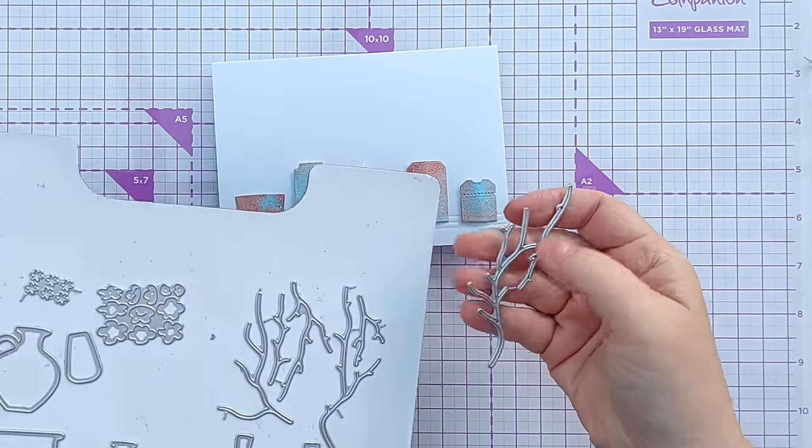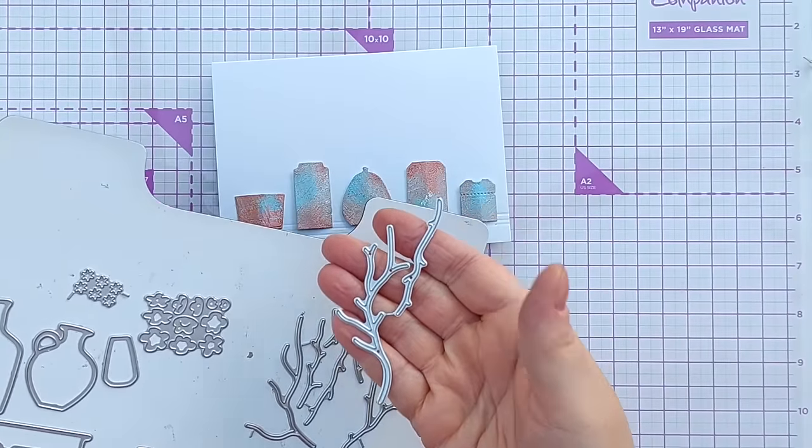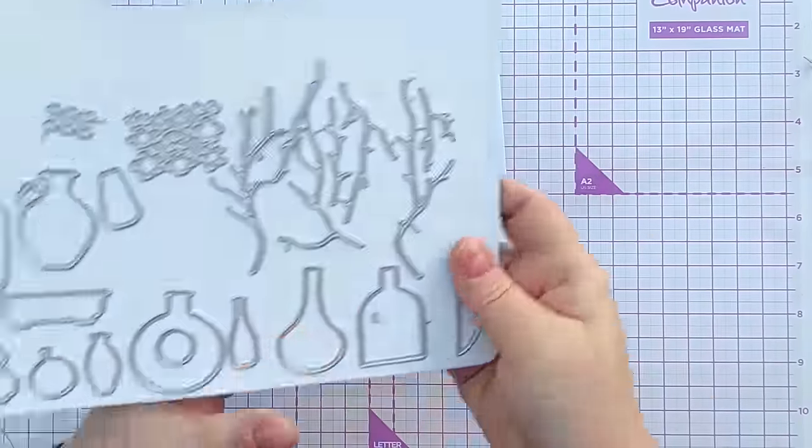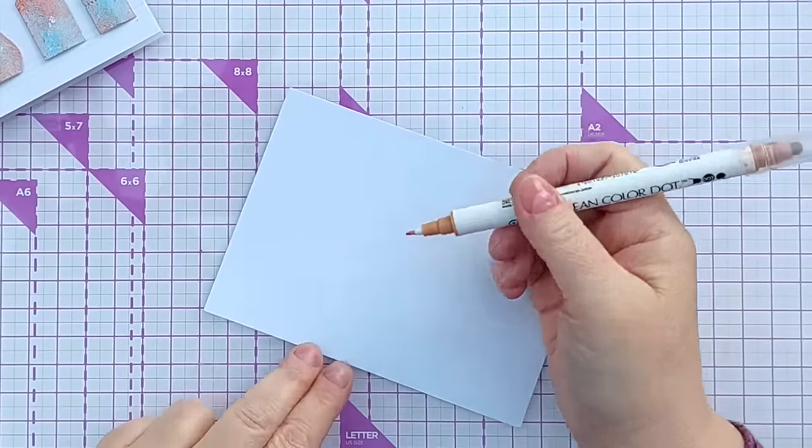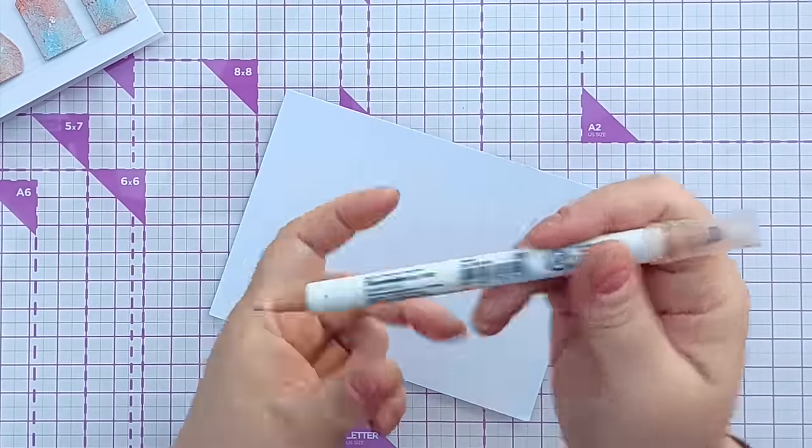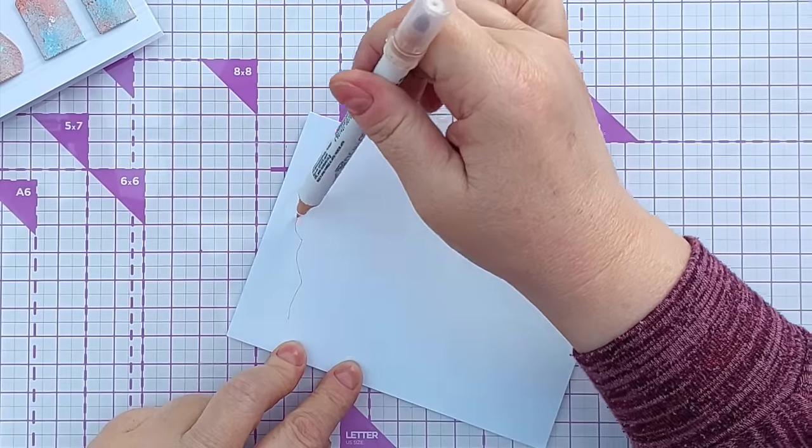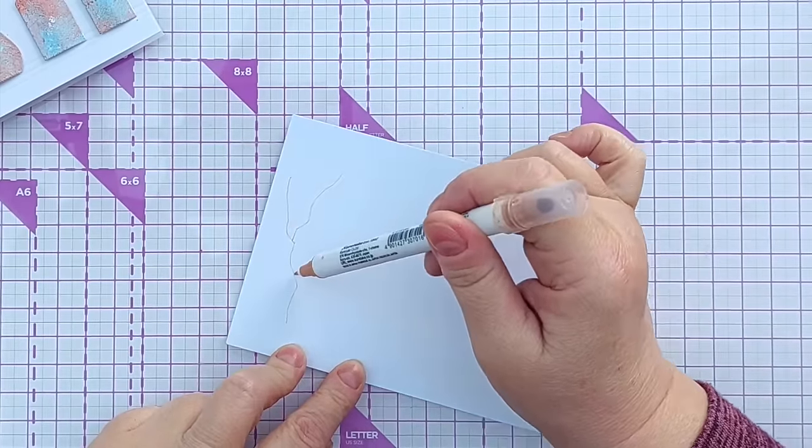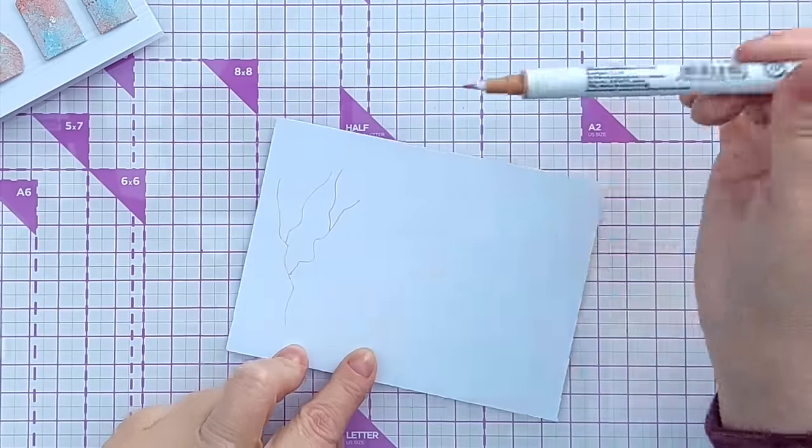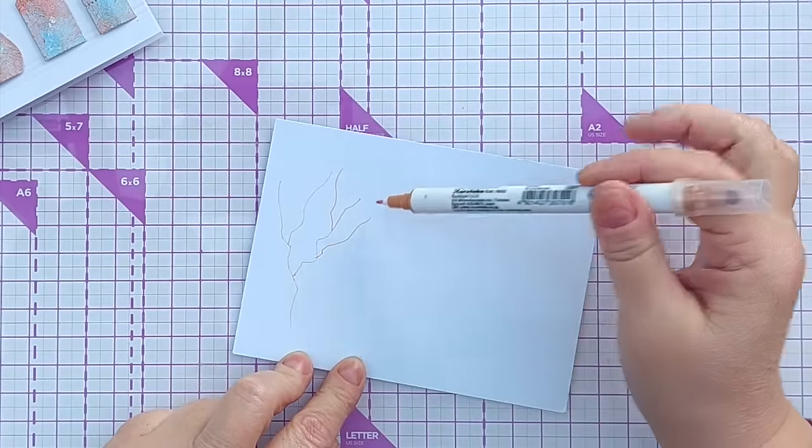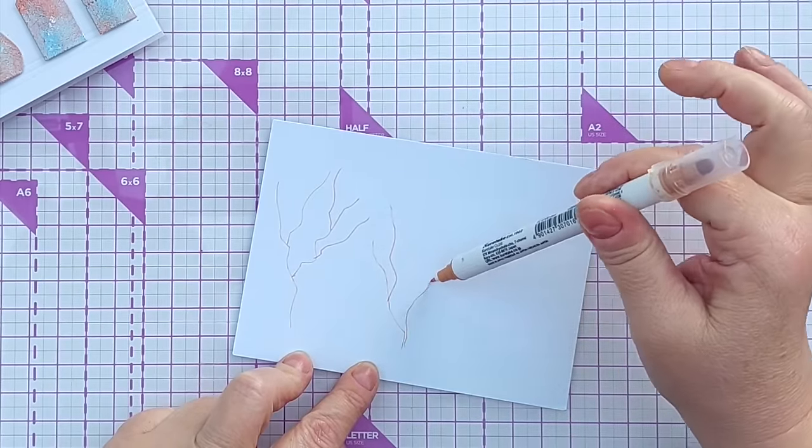To create my branches I used the branch dies and I just cut some cardstock that I'd coloured with vintage photo and then glued them in. But what if you haven't got branch dies? Well you can draw your branches on. So I've got a brown fineliner here and I'm going to hold it at the top end to reduce the amount of control that I have. Place it on and just draw zigzaggy lines.